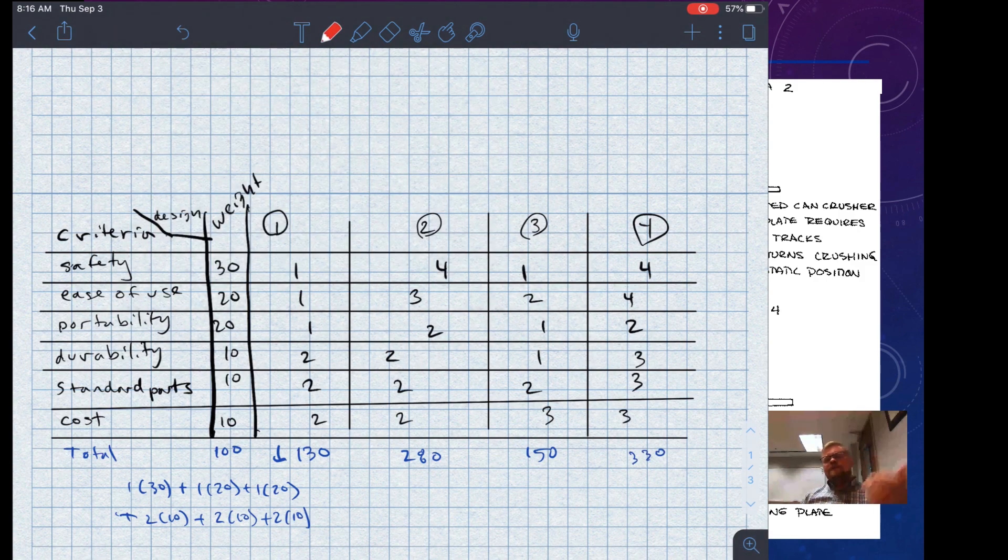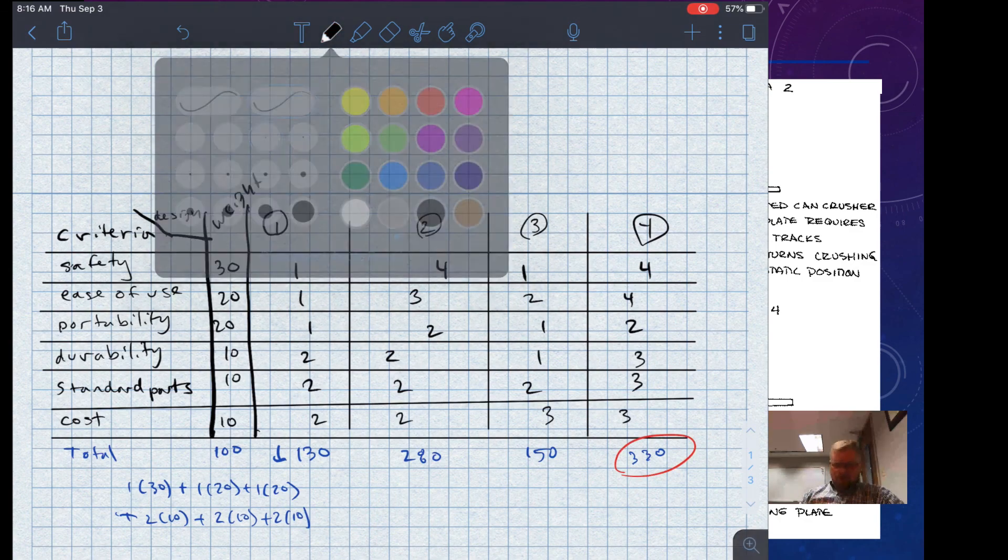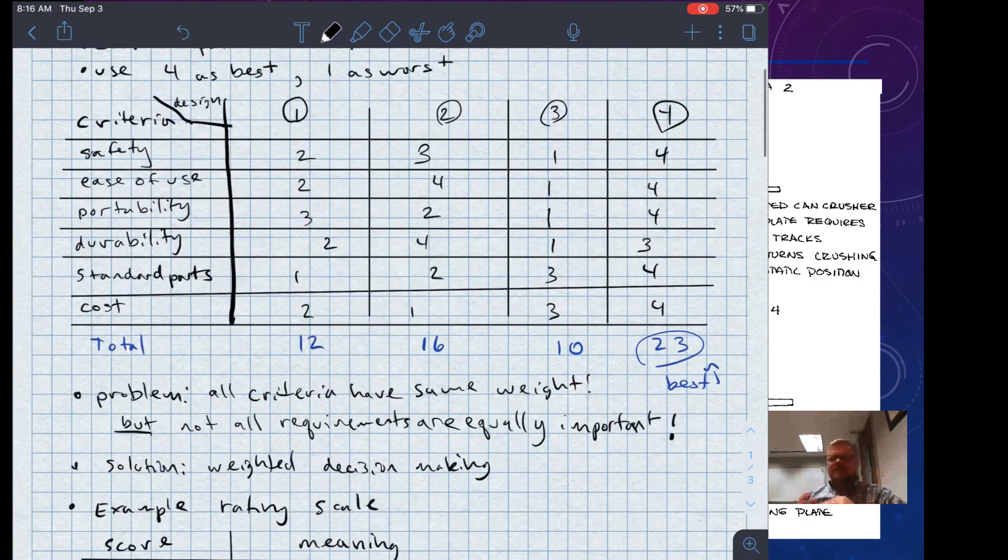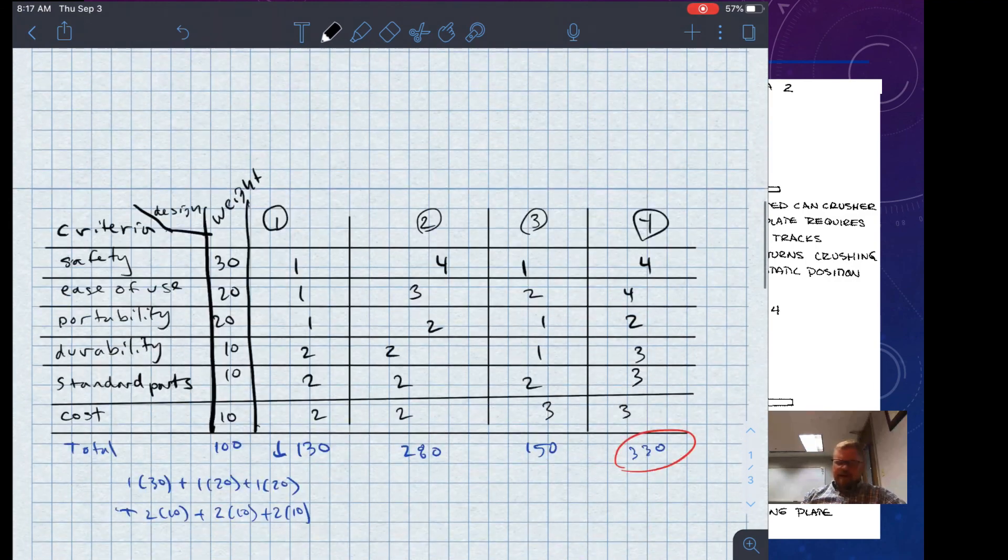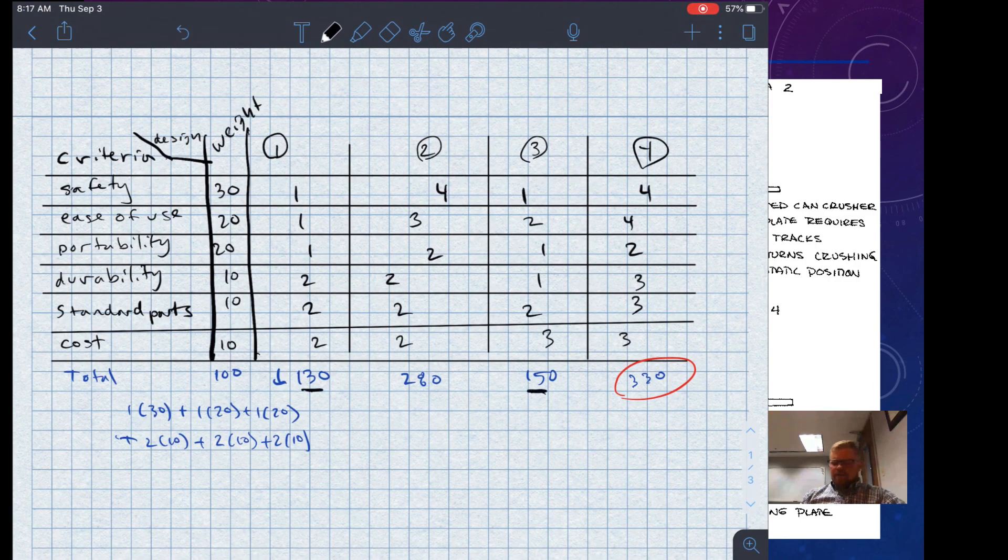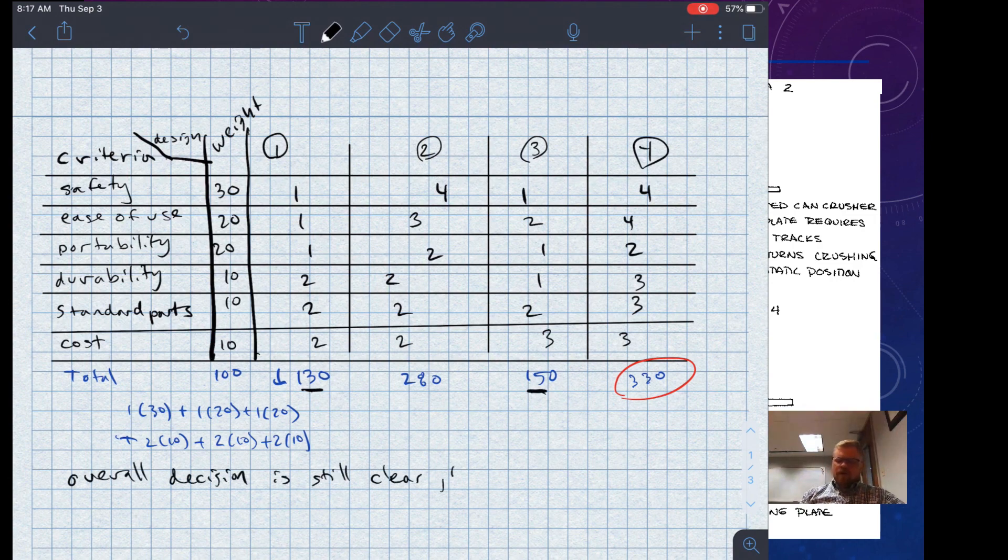Overall, the decision is still clear that design four is the best, but the position of the others in their rank has changed. In fact, if I look back at what I had previously, I would have ranked them as four is the best, then two, then one, then three. But according to this weighted version, I would rank them as four, two, three, one.